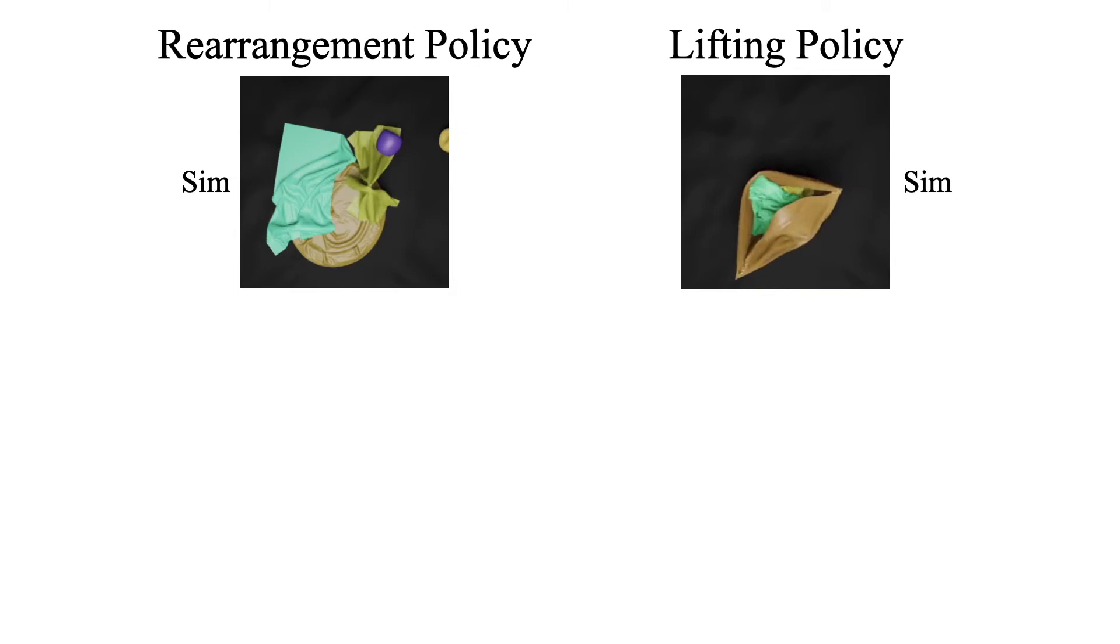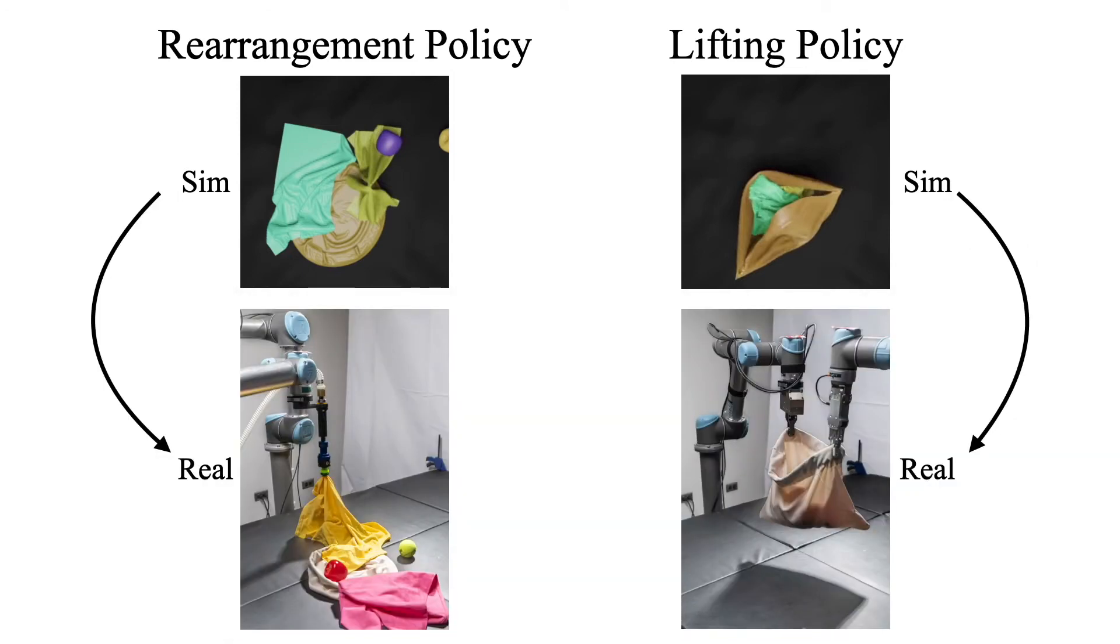Our approach involves training two policies in simulation, a rearrangement policy and a lifting policy, and transferring them to the real world. The rearrangement policy performs sequential pick and place actions to rearrange or fold items, while the lifting policy predicts a pair of points that are likely to be graspable and enable a successful lift.